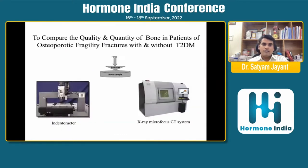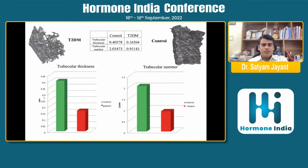We have different modalities to assess quality and quantity of bone in osteoporotic fragility fracture patients with or without type 2 diabetes, including indentometry and X-ray micro-focus CT systems. Trabecular thickness and trabecular number are significantly reduced in diabetic patients compared to non-diabetic controls.